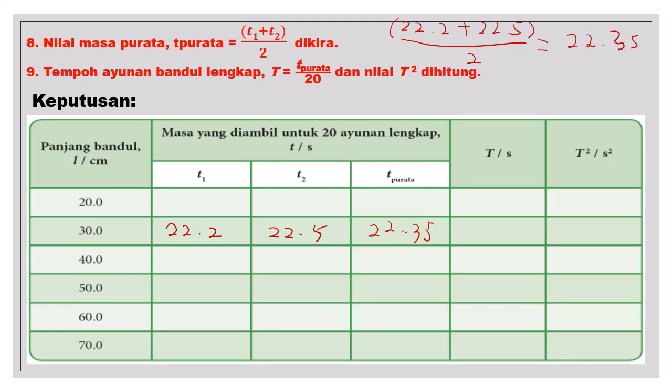Kemudian bagaimana mengkirakan tempoh ayunan iaitu simbol T besar, T huruf besar ialah menggunakan T purata bahagi 20. Sebab tadi ini T purata ialah masa untuk 20 ayunan. Jadi kamu di sini untuk T, T ialah masa untuk satu ayunan yang lengkap. Jadi kamu nak dapat masa untuk satu ayunan lengkap, jadi kamu kena gunakan T purata masa untuk 20 ayunan bahagi dengan 20. Jadi gunakan nilai 22.35 bahagi 20. Kemudian di sini kamu catatkan jawapan, catatkan dalam 2 tempat perpuluhan.